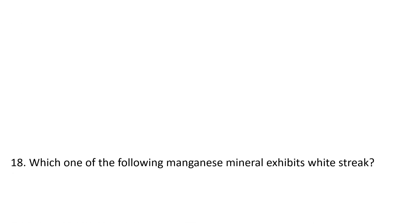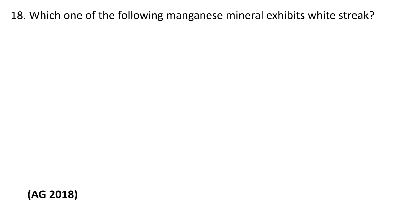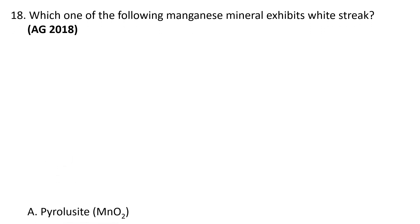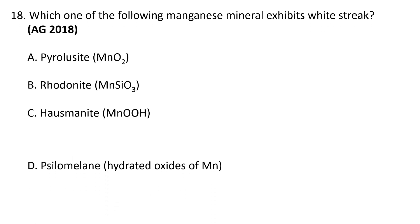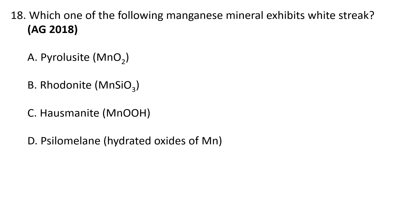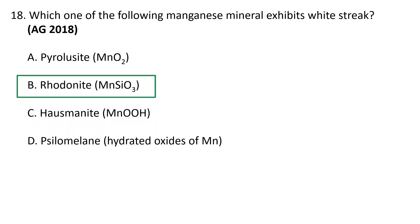Next question. Which one of the following manganese minerals exhibits a white streak? A. Pyrolusite, B. Rhodonite, C. Hausmannite, D. Xylomilane. The correct answer is B — Rhodonite. It exhibits a white streak.